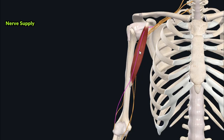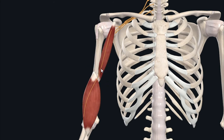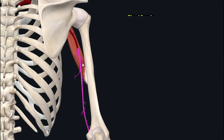Like the other muscles of the anterior compartment of the arm, the coracobrachialis is supplied by the musculocutaneous nerve, which runs deep to the biceps brachii and just above the coracobrachialis and brachialis muscles to supply all three anterior compartment muscles. In terms of blood supply, the coracobrachialis is supplied by the brachial artery.